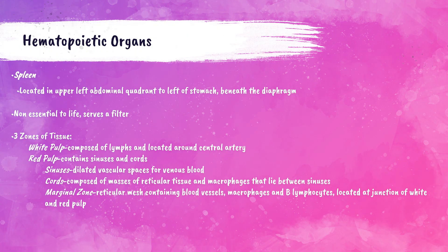The spleen is a hematopoietic organ that serves as a filter, located in the upper left abdominal quadrant to the left of the stomach under the ribs. The spleen has three zones of tissue: the white pulp, composed of lymphoid tissue and lymphocytes; the red pulp, composed of a network of sinusoids and splenic cords filled with blood; and the marginal zone, a reticular mesh with vessels, macrophages, and lymphocytes located at the junction of the white pulp and the red pulp.